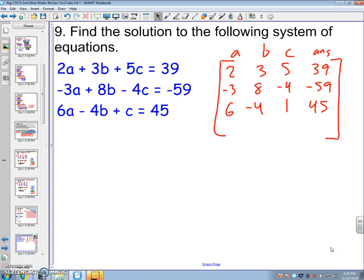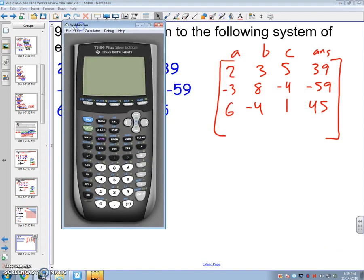I've got my calculator. So I'm going to press 2nd matrix. I'm going to make a matrix. Edit. 3 by 4. Type in carefully. So 2, 3, 5, 39. -3, 8, -4, -59. 6, -4, 1, 45. 2nd quit, 2nd matrix, math, up to R, E, F, 2nd matrix, A, enter.